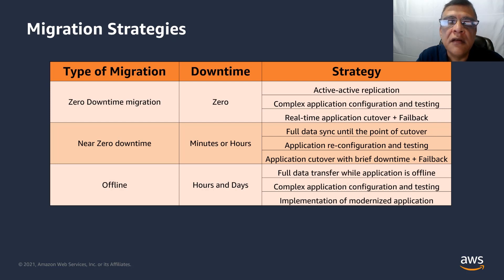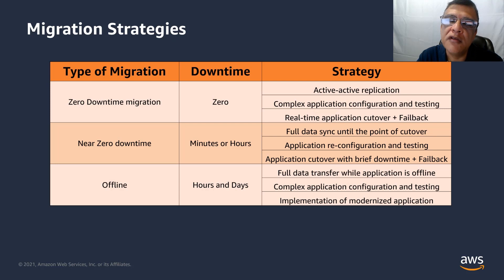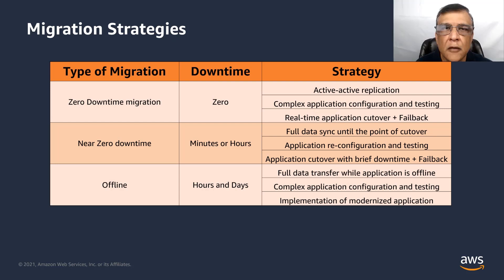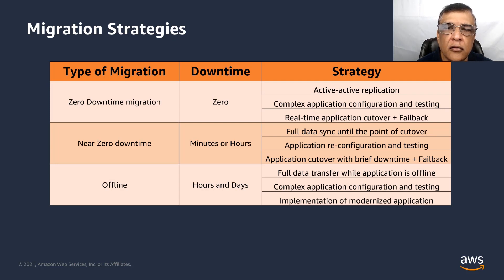That way, testing and complex application configuration can take place and it can be verified that the application can run smoothly on the new database in AWS infrastructure. During the cutover, the application is running in real time, meaning end users are still using the application while it cuts over from on-prem to the database running in AWS. After the cutover, the two databases still remain in sync, giving an option for fallback if the path is chosen to reverse the migration.